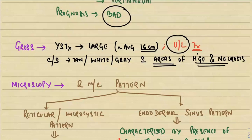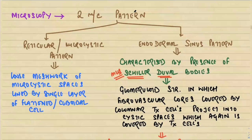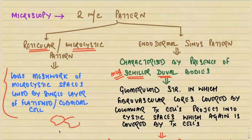Microscopically, there are two important MCQ patterns. The first is the reticular or microcystic pattern — a loose meshwork of microcystic spaces separated by very thin septa, lined by a single layer of flat or cuboidal cells. The second important pattern is the endodermal sinus pattern, characterized by structures called Schiller-Duval bodies — glomeruloid structures with fibrovascular cores covered by columnar tumor cells projecting into a cystic space, which is again covered by tumor cells.